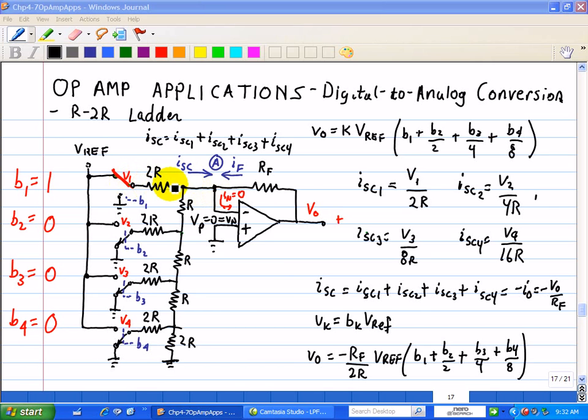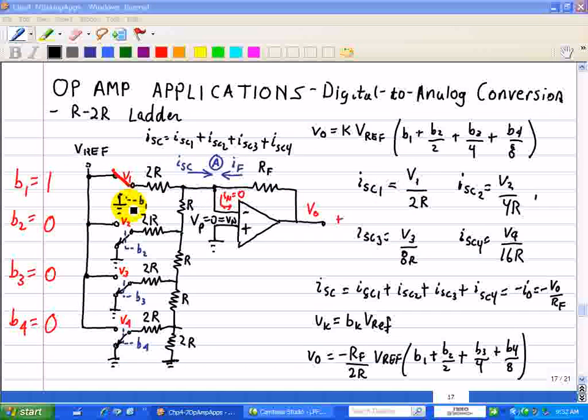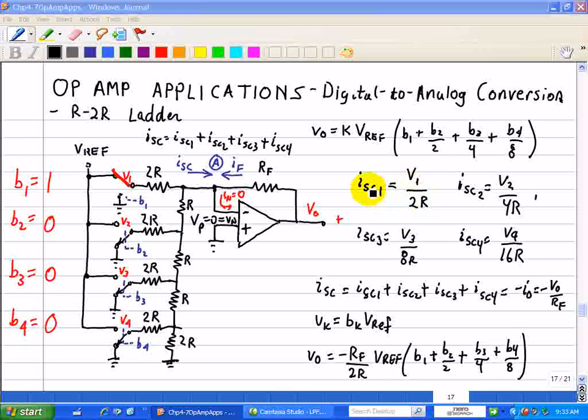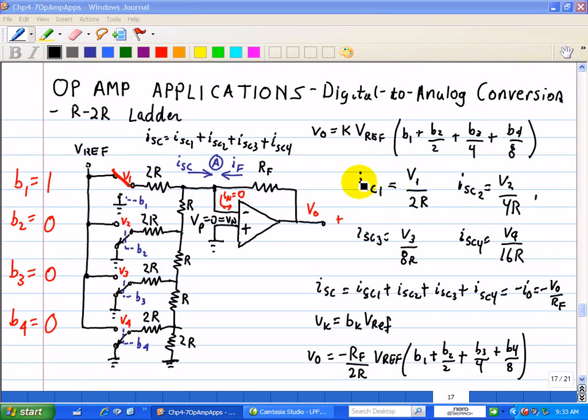So, the voltage across this 2R resistor is V1, and the current, we'll call this the short-circuit current 1, and that's the contribution of the total current ISC due to each of the voltage inputs. So, we have ISC1, ISC2, ISC3, and ISC4. For V1, it's V1 divided by 2R. And we'll show, and this is where the analysis gets complicated, V2 divided by 4R is the contribution of ISC2. ISC3 is V3 divided by 8R, and then you can see the pattern, ISC4 is V4 divided by 16R. So, you can see that the currents are binary weighted.